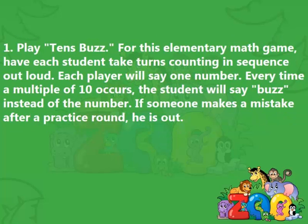Instructions 1. Play 10's Buzz. For this elementary math game, have each student take turns counting in sequence out loud. Each player will say one number. Every time a multiple of 10 occurs, the student will say buzz instead of the number. If someone makes a mistake after a practice round, he is out.